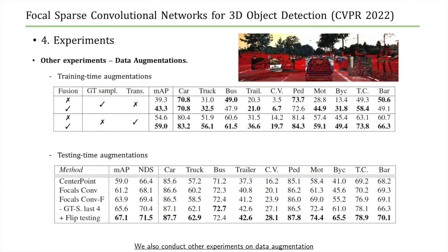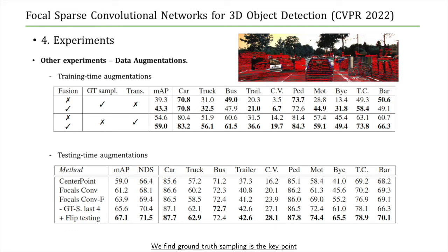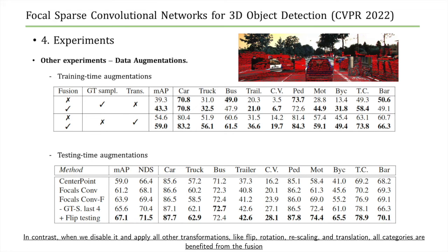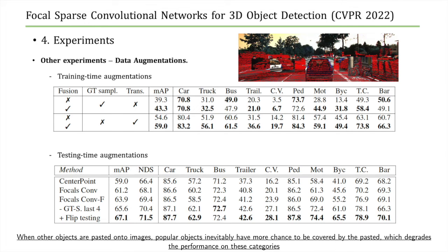We also conduct experiments on data augmentation. A surprising finding is that multimodal fusion makes performance stay the same or worse on some popular categories — car, pedestrian, and barrier. We find ground truth sampling is the key point: when it is used, performance on some popular categories stagnates or degrades. In contrast, when we disable it and apply only other transformations like flip, rotation, rescaling, and translation, all categories benefit from the fusion. We suppose this is due to image-level copy-paste: when other objects are pasted onto images, popular objects have more chance to be covered, which degrades performance on those categories.